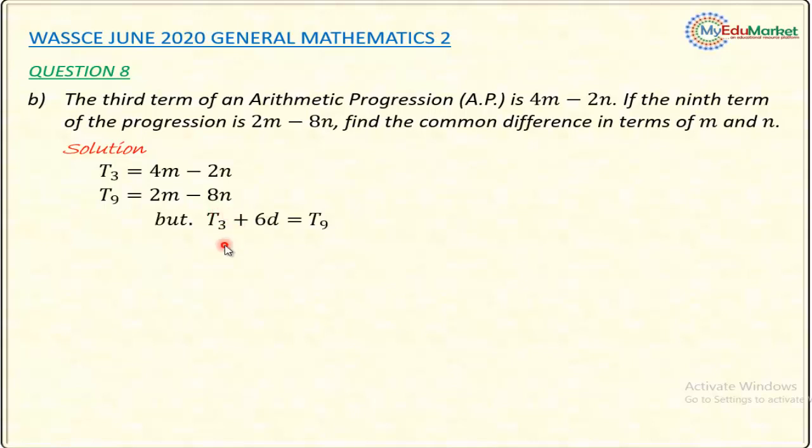But what do we do to get the next term? For example, from term number 3 to get term number 4, you add D. Term number 4 to get term number 5, you add another D.